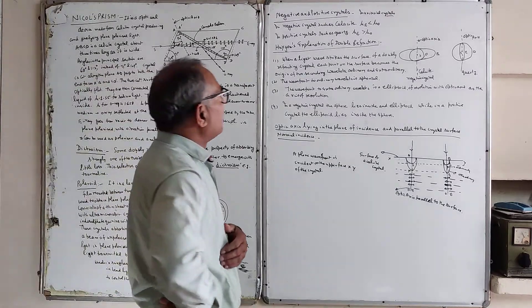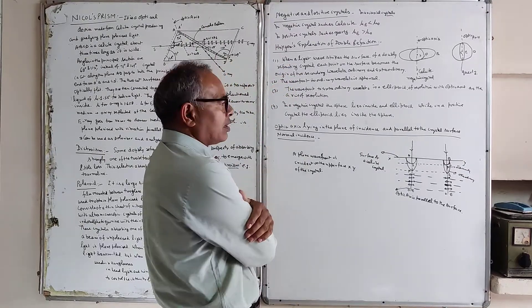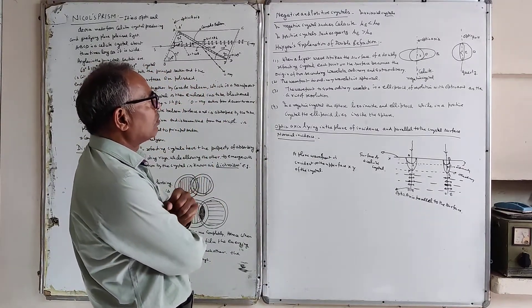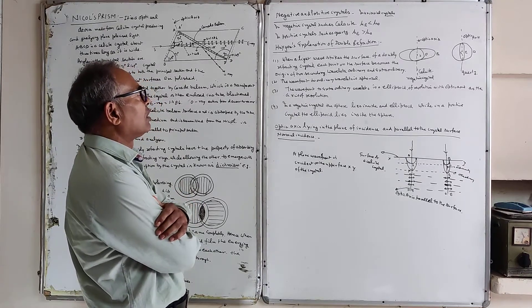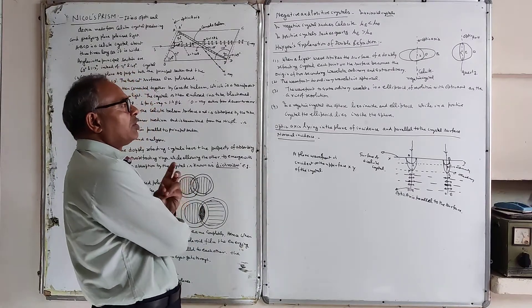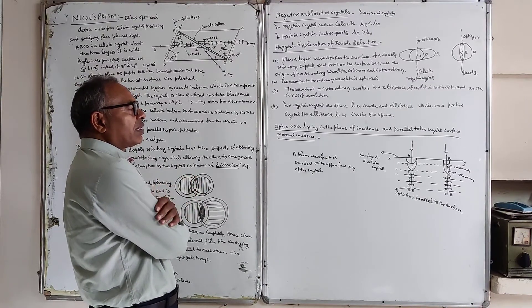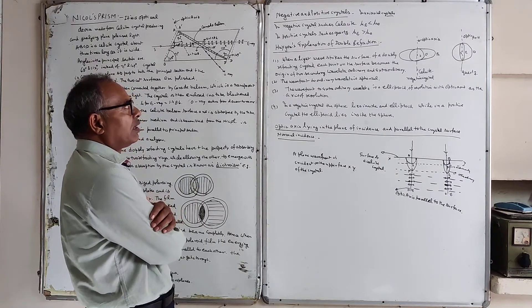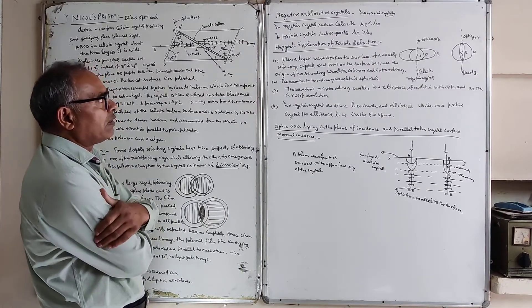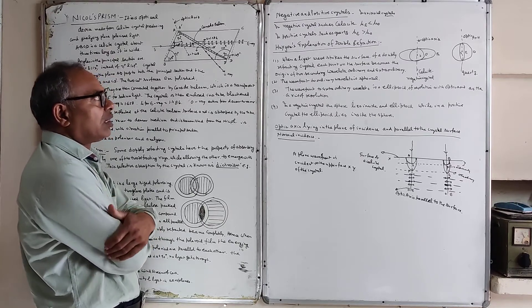Now we come to negative and positive crystals. In uniaxial crystals there are two types. In negative crystals, such as calcite, the refractive index of the extraordinary wave is less than that of the ordinary wave. In positive crystals, such as quartz, the refractive index of the extraordinary wave is greater than that of the ordinary wave.